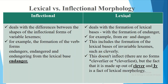In contrast, lexical morphology deals with the formation of lexical bases — for example, from 'en' and 'danger' we get the word 'endanger'. This includes the formation of lexical bases of invariable lexemes such as 'cleverly'. We cannot get inflectional forms of 'cleverly' like 'cleverer' or 'cleverest', but the fact that it is made from 'clever' and '-ly' is the area of lexical morphology.